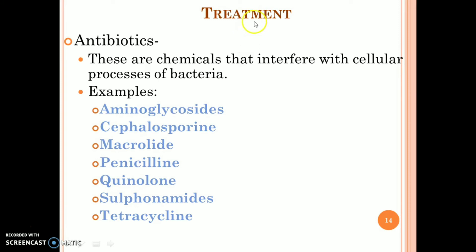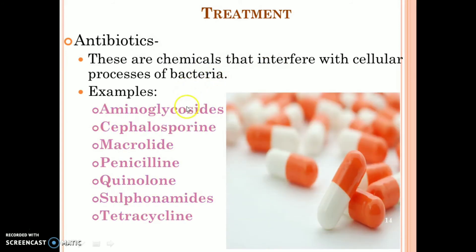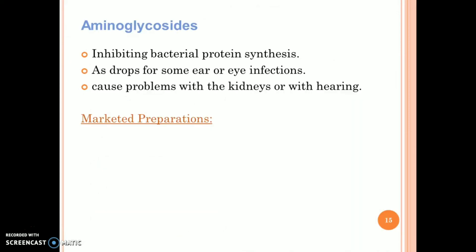The treatment of bacterial diseases involves antibiotics — chemicals that interfere with cellular processes of bacteria. Examples include aminoglycosides, cephalosporins, macrolides, penicillin, quinolones, sulfonamides, and tetracyclines, among other antibiotics used in the treatment of various bacterial diseases.